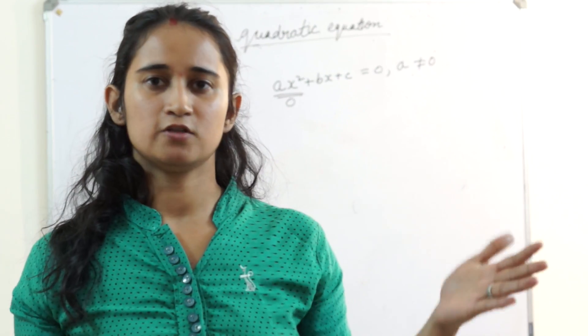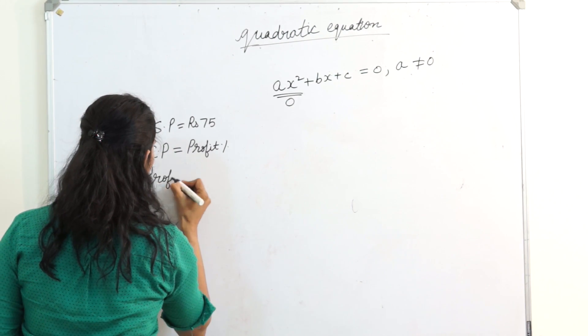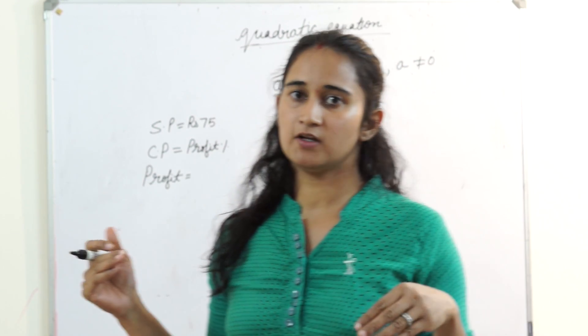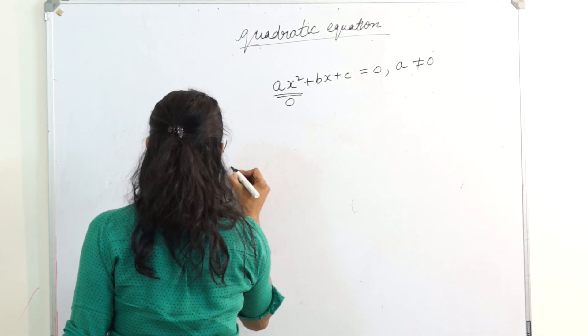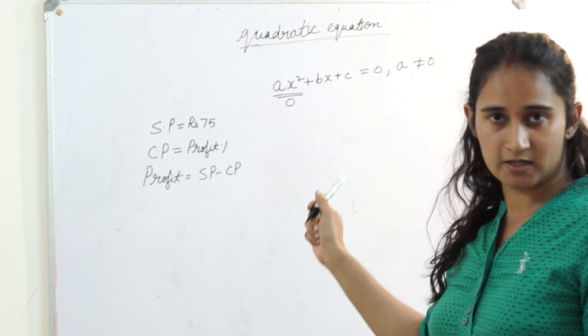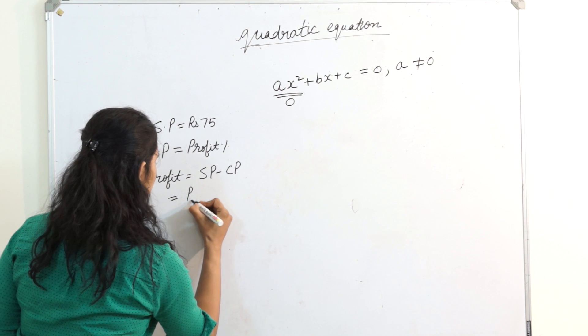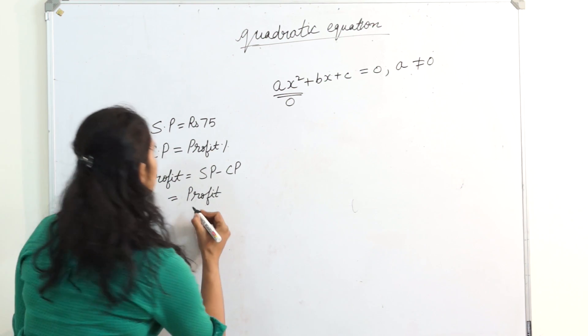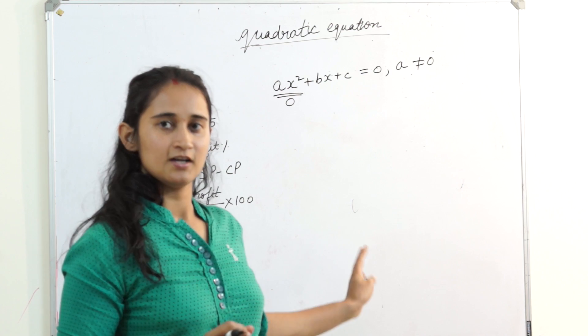You might be thinking we were starting quadratic equation, now this lady is moving towards profit and loss. But no, I'm not. Watch it. What is your profit? My profit is selling price minus cost price. But am I asking about profit? No, I am asking about profit percent. So how do we calculate percentage? Very simple, divided by hundred. So my profit percentage is profit divided by cost price multiply by 100.